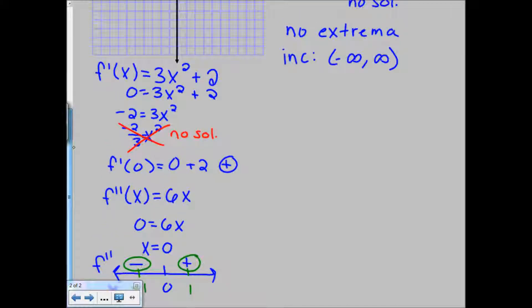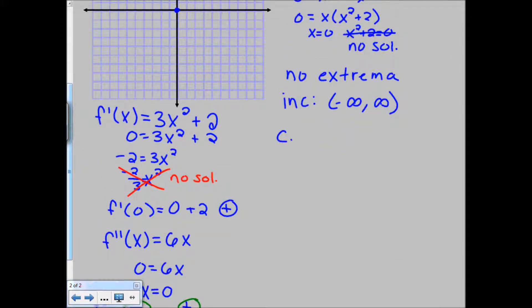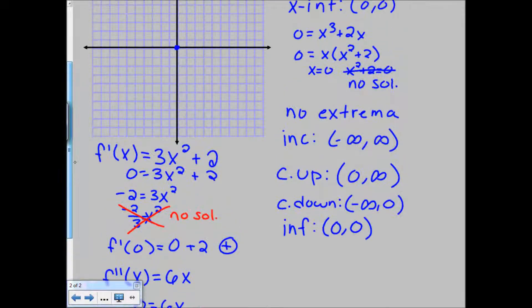So we have a few more pieces of information to write up. So we know that we're concave up from 0 to positive infinity. And then we're concave down from negative infinity to 0. And then we have an inflection point at 0, which we knew the y value is already 0 because that's where our y-intercept was and our x-intercept.